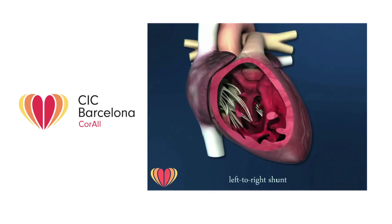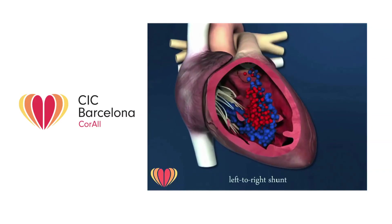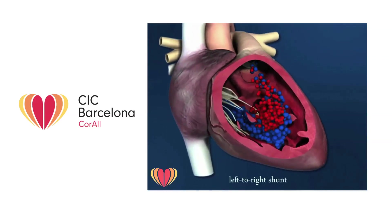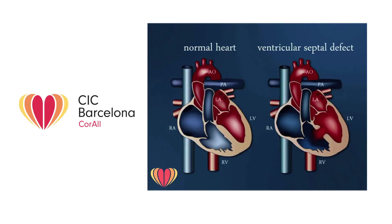Blood pressure is usually higher in the left ventricle than in the right ventricle; therefore blood flows across the defect from left towards right, causing a left-to-right shunt. The magnitude of the shunt depends on the size of the defect. The left-to-right shunt usually causes an increase in right ventricular pressure and progression to pulmonary artery vascular disease. Increasing ventricular pressure may reduce the shunt, and in cases with severe pulmonary vascular disease, the shunt may even reverse right to left, thereby causing cyanosis.